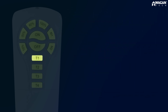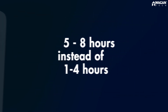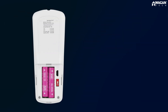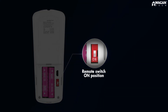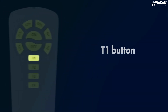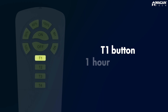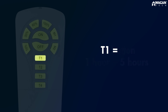You can also set the timer between five and eight hours by opening the battery compartment and turning the remote switch button into the on position. This will change the T1 button from a one hour timer to a five hour timer — think of it as T5, five hours. T2 will now be T6, six hours, and so on.